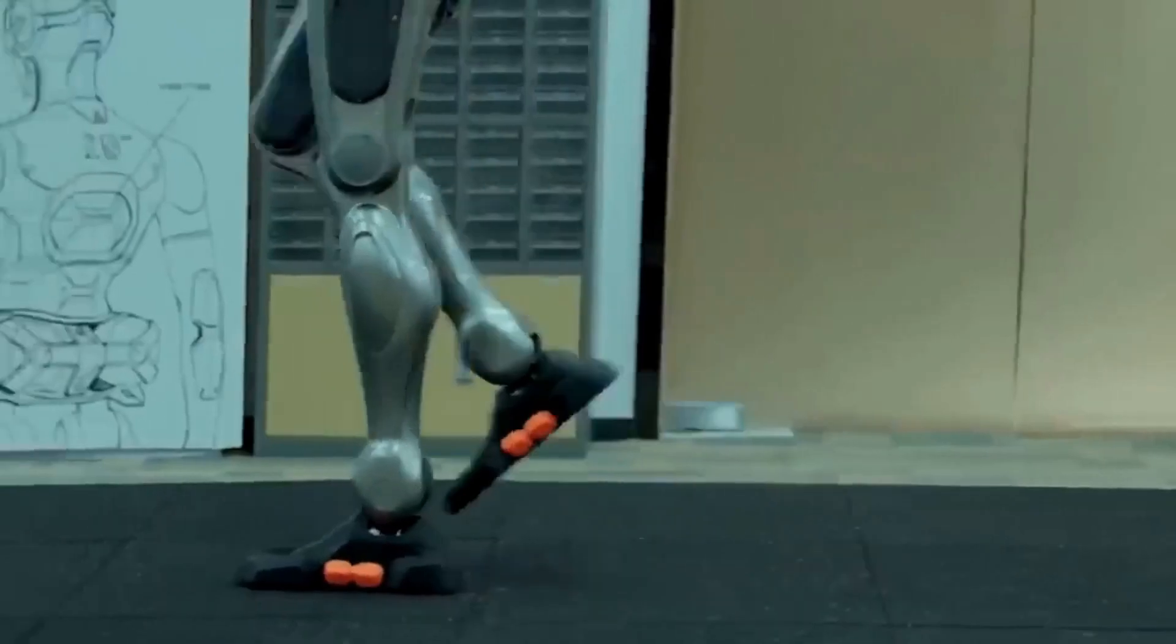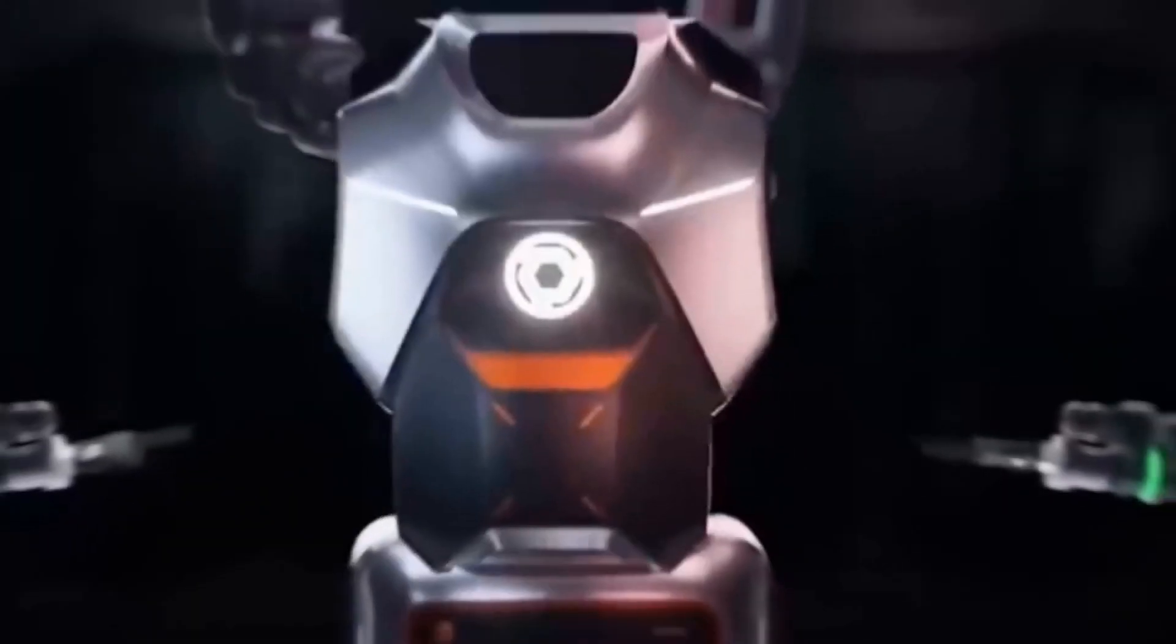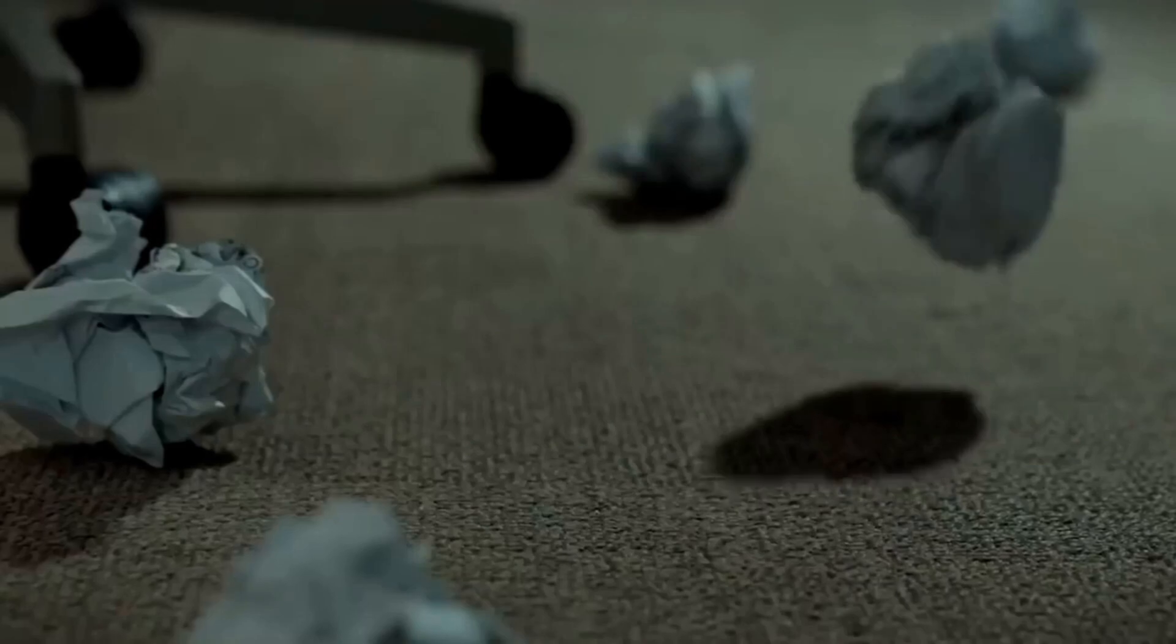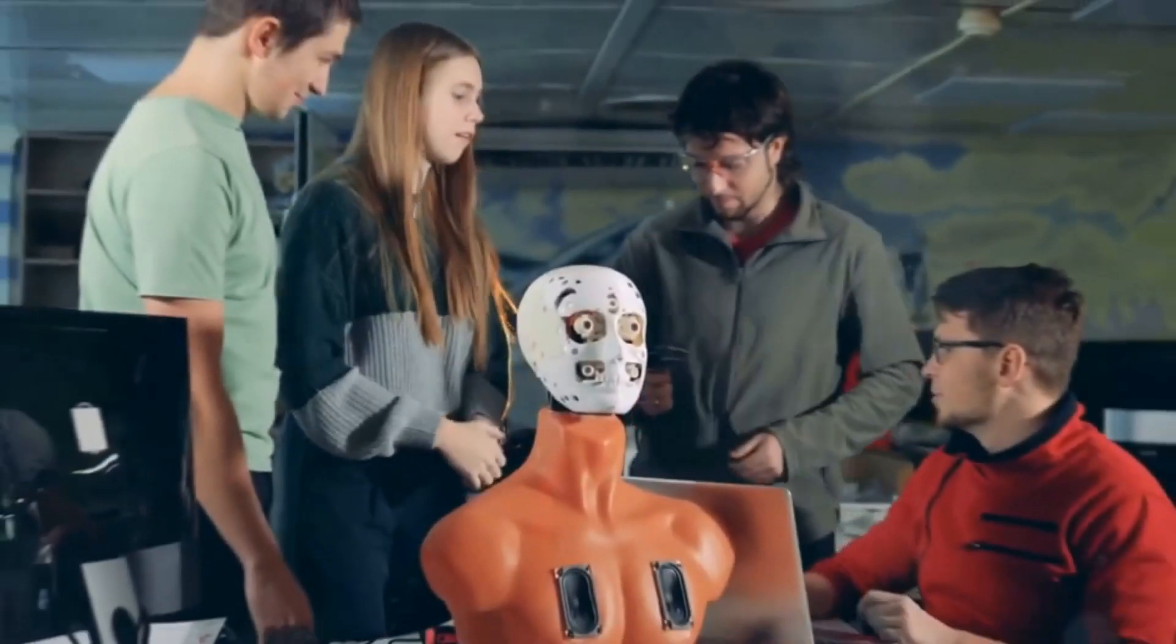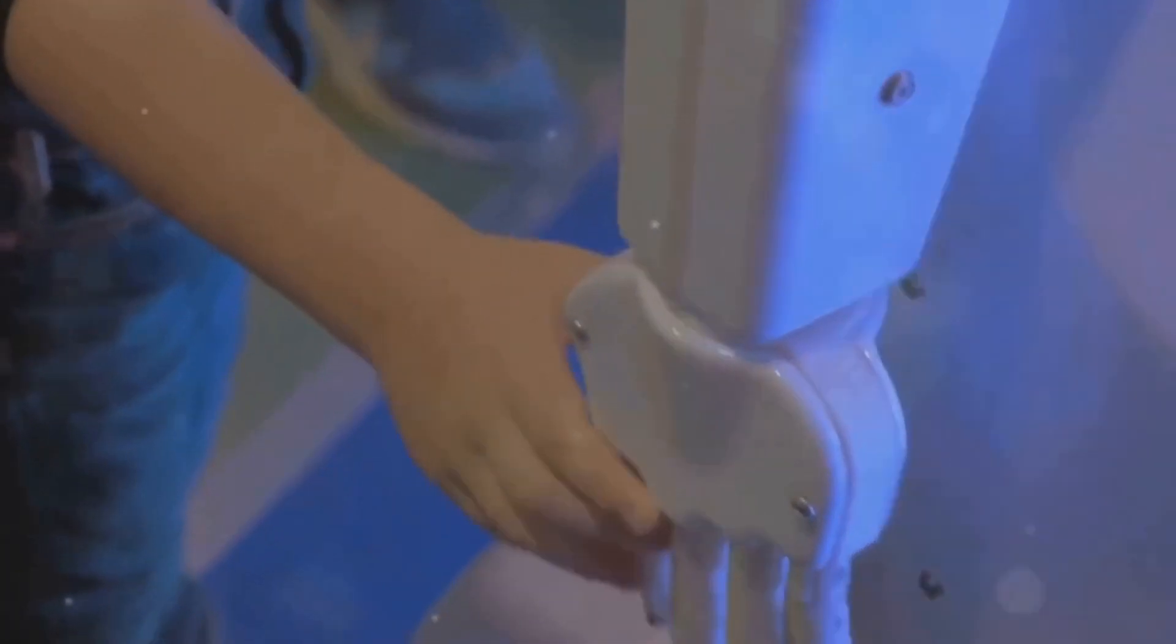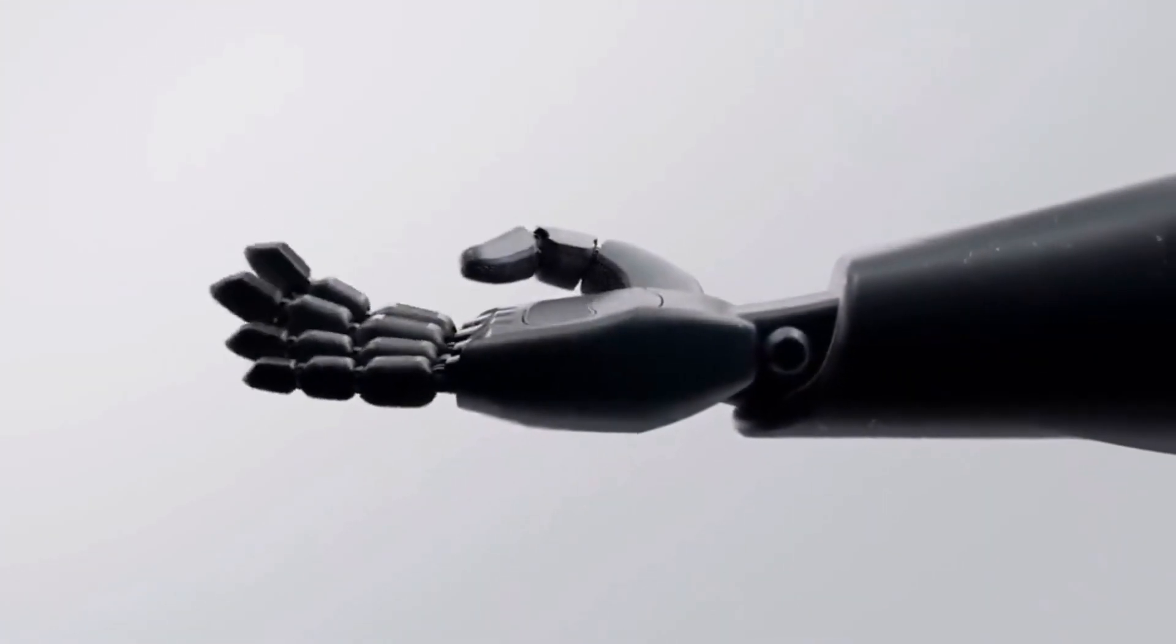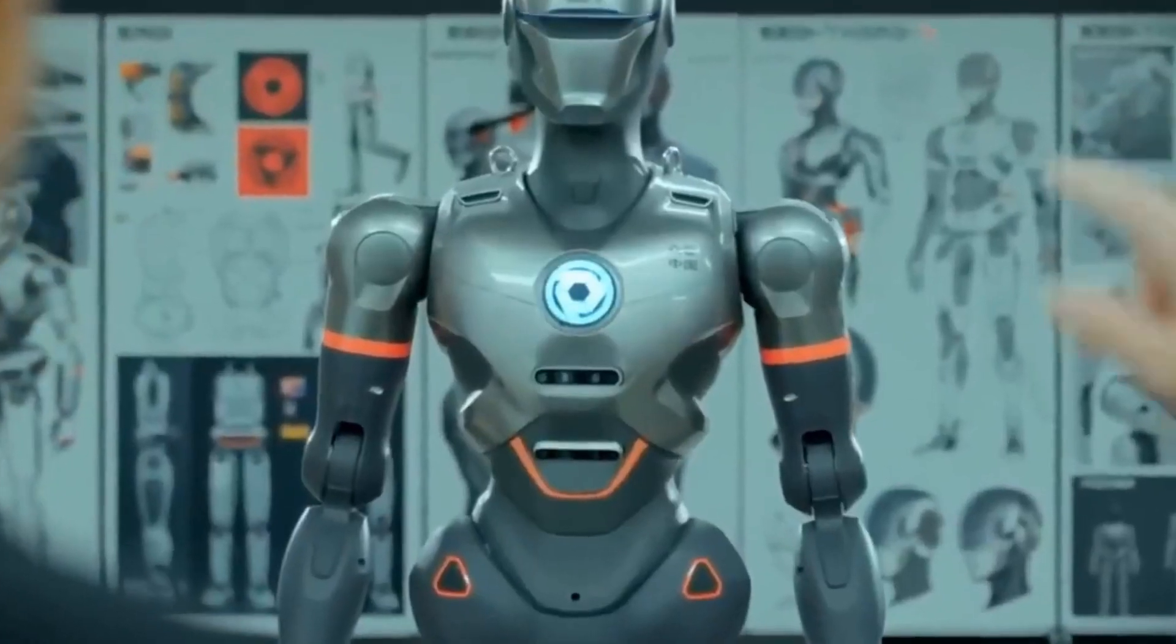But we will also have to face very complex dilemmas. How can we ensure that these robots are used ethically? How can we prevent them from being exploited in a way that does not benefit society as a whole? And how can we ensure that coexistence with these artificial beings is peaceful and advantageous for everyone? These are questions that we can only answer as we progress, but they should already be discussed now while technology is still in development.